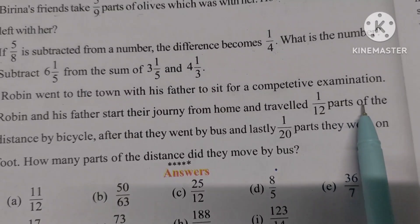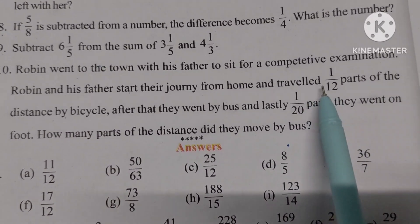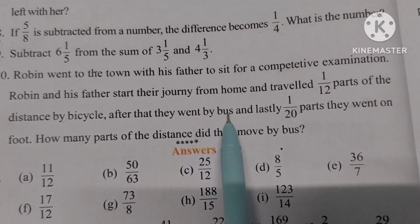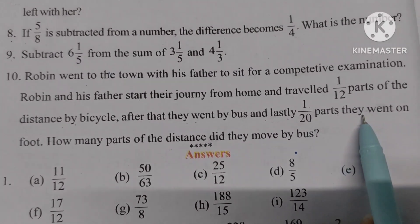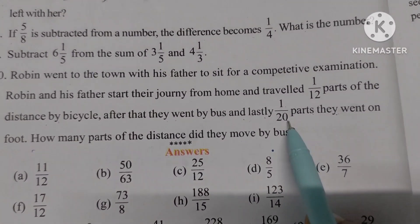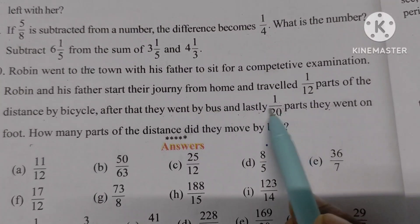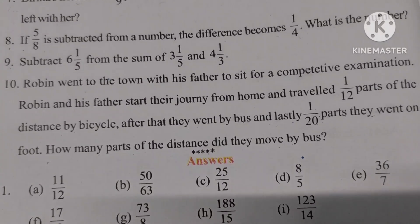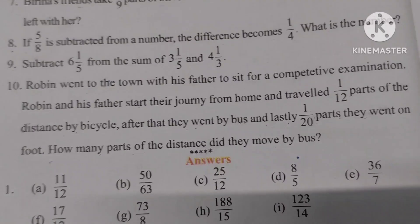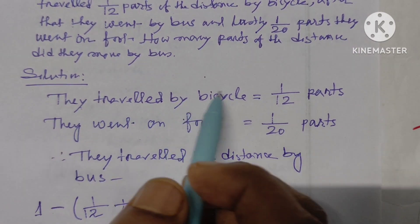They covered 1 by 12 parts of the distance by bicycle, the same distance by bus, and lastly 1 by 20 parts they went on foot. What is the distance traveled by bus? How many parts of the distance did they move by bus? They traveled 1 by 12 parts by bicycle.